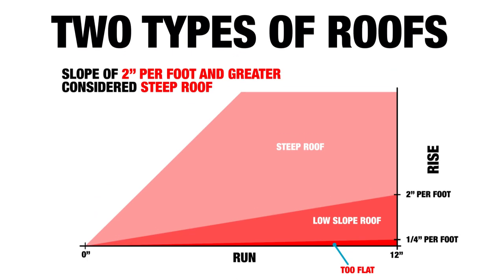We have two types of roofs — two flavors. We have low-slope roofs, often called flat roofs, though they're of course not flat; they have a low slope. Those are any roof less than 2-in-12, or less than 17%. Anything steeper than that we call a steep roof, and anything shallower than a quarter inch per foot is generally too flat unless we take special structural precautions.